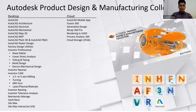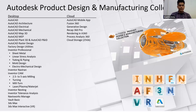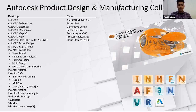We also have Factory Design Utilities. In Factory Design Utilities, we have Inventor Professional, which includes sheet metal, linear stress analysis, tubing and piping, mold design, and electromechanical design. We also have Inventor Nastran and Inventor CAM, which can do 2.5 to 5-axis milling, turning process, mill-turn process, and laser plasma water jet cutting.